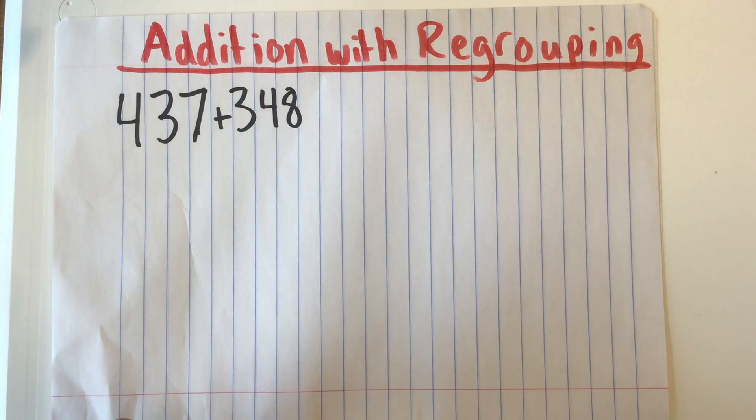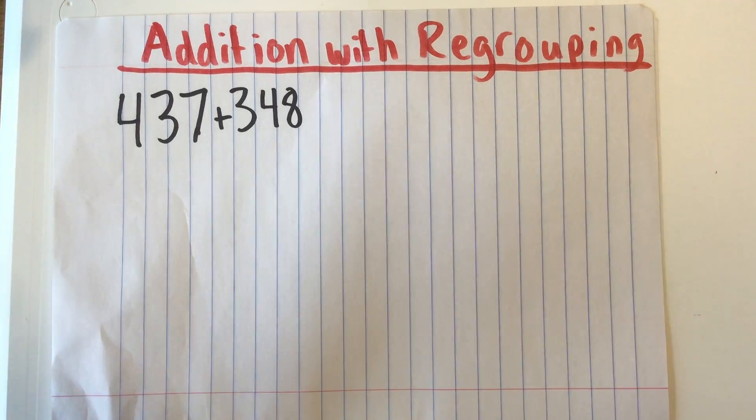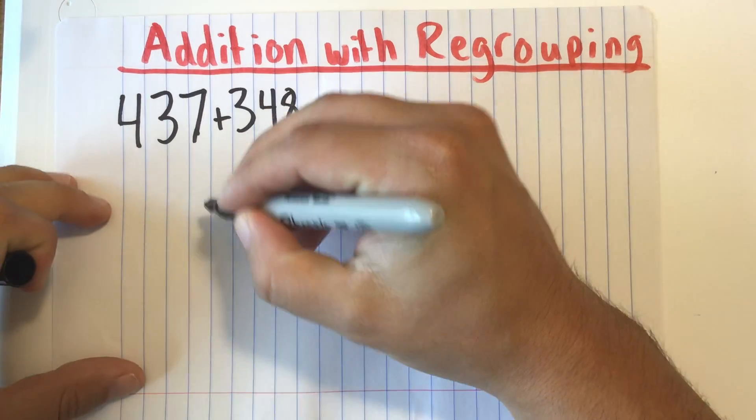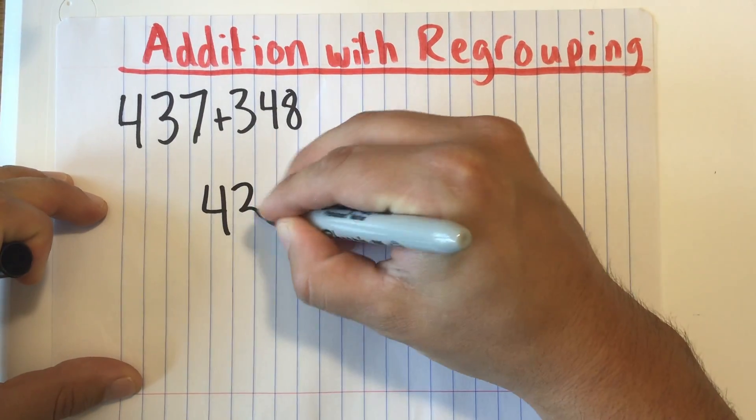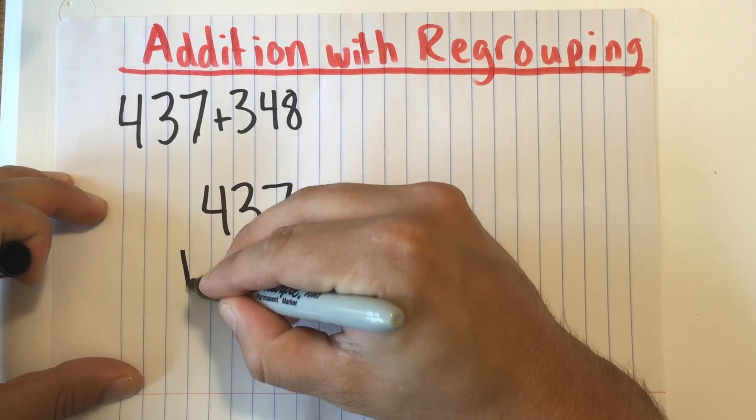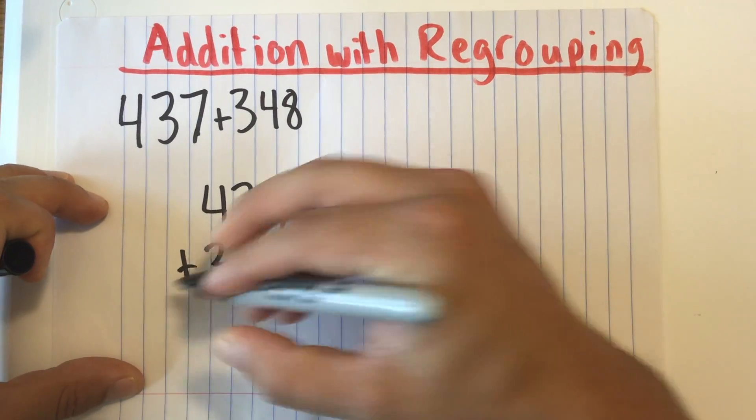Now remember, the first thing that we always want to do is line these numbers up vertically and make sure their place values match. So I'm going to put 437 plus 348.